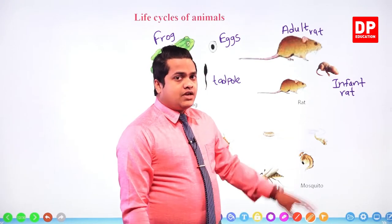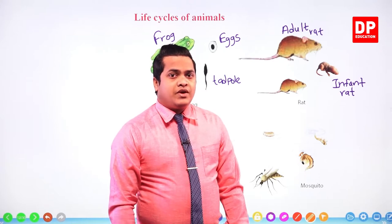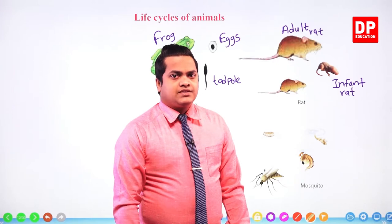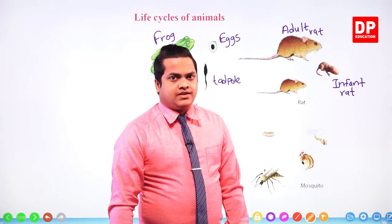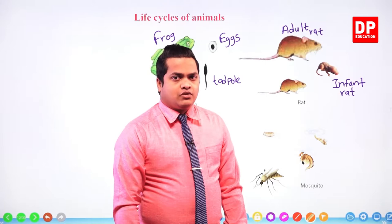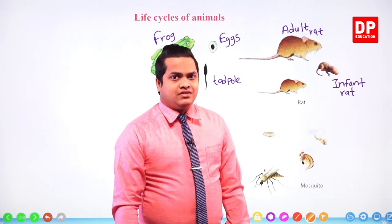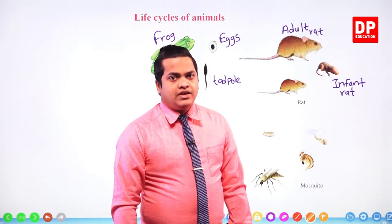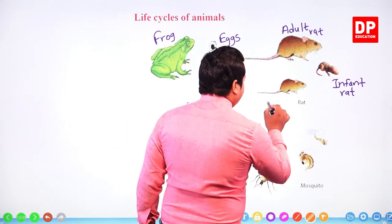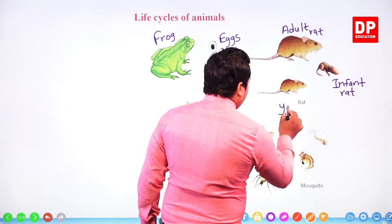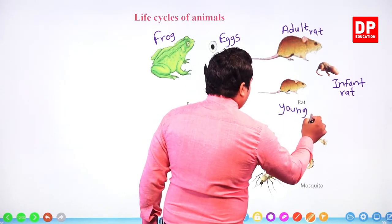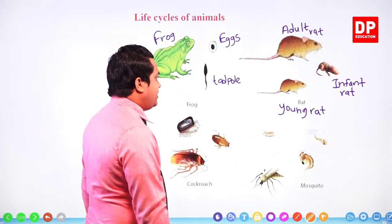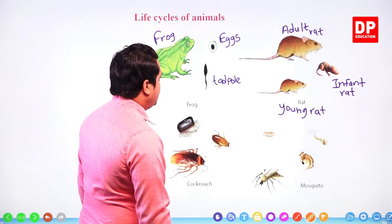Unlike the adult rat, the main nutritional method of infant rats is feeding on mother's milk, and they do not have hairs on the skin. Their body structure is very similar to the adult rat. If you take the young rat, it is very similar to the adult rat — the only difference is that its body size is somewhat smaller. All other nourishment methods, locomotive methods, and living habitats are the same.